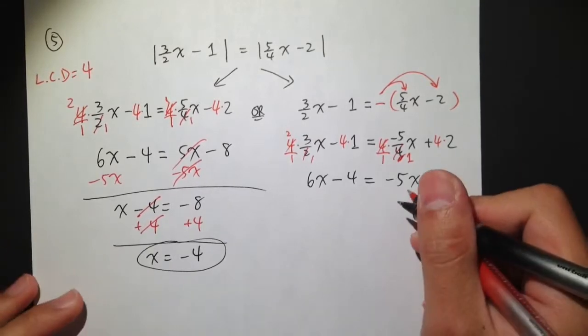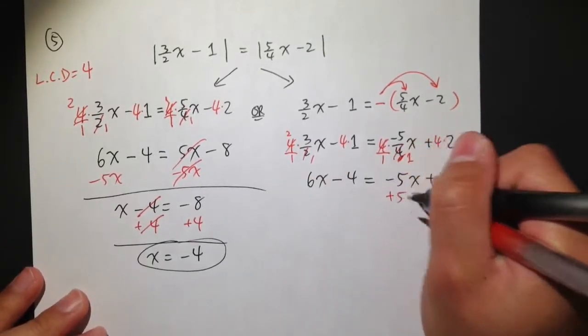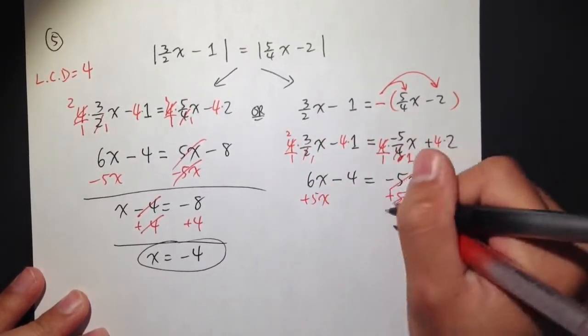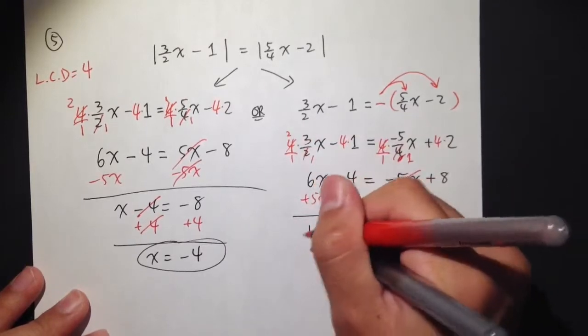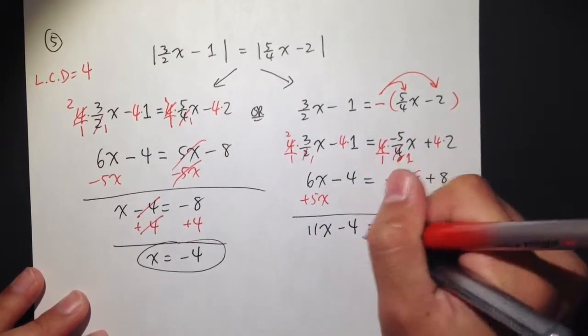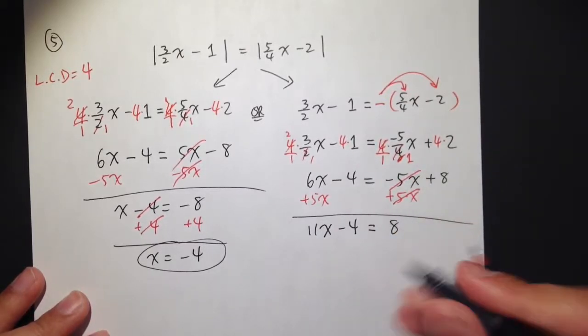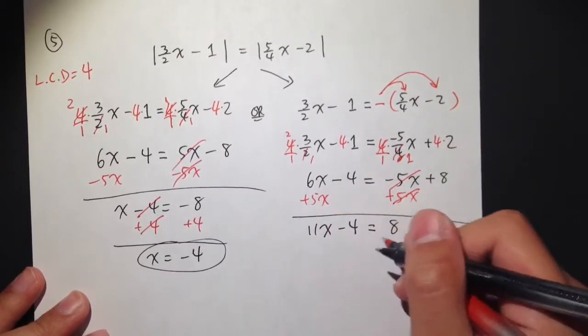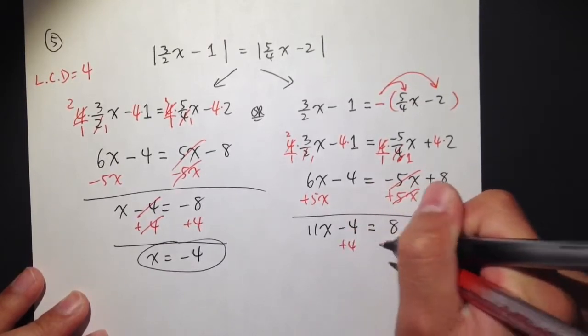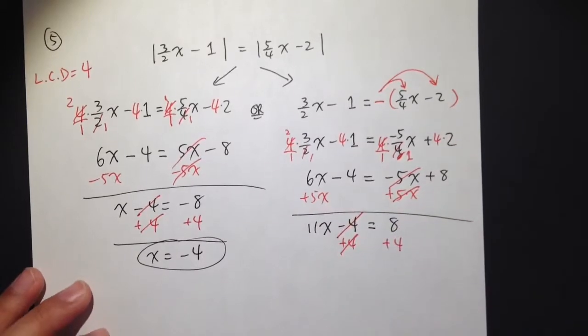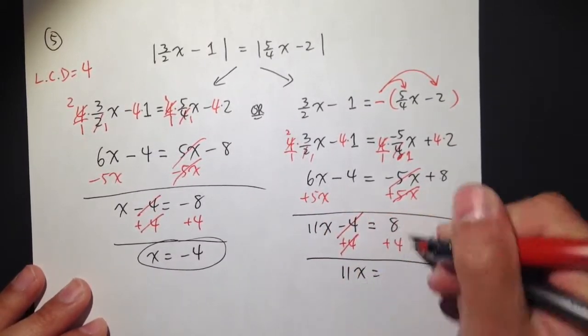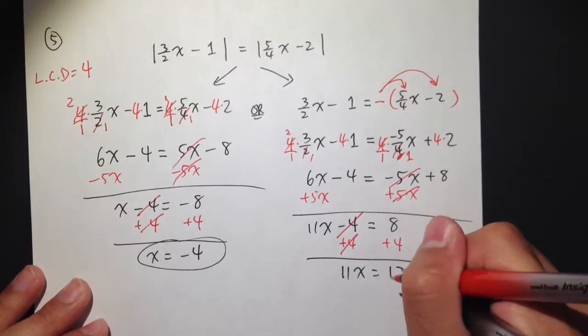Move all the x to the left-hand side. Plus 5x on both sides. Cancel the 5x, and then we get 11x minus 4 equals 8. So, I have 11x minus 4 is equal to 8. Let's get rid of the number by adding 4 on both sides. I get 11x is equal to 8 plus 4 is 12.